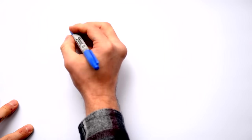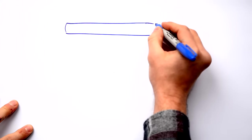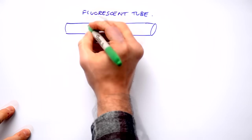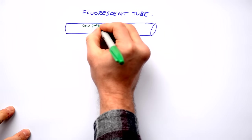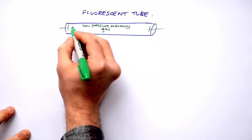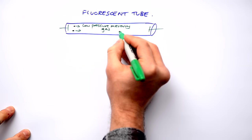One place that we see excitation and de-excitation happening is in a fluorescent tube. What we have in here is low pressure mercury gas. And what we do is we fire electrons from one end to the other.